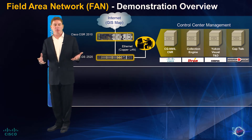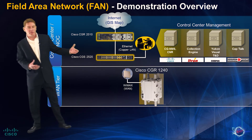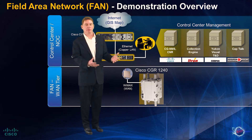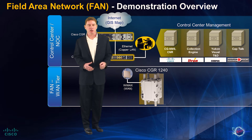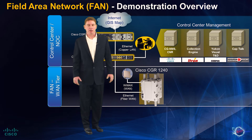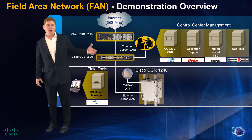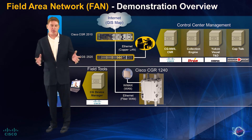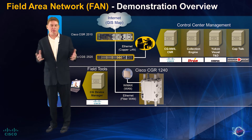At the core of the field area network WAN tier is the Cisco Connected Grid Router 1240, which provides a utility-grade ruggedized routing platform for connecting devices in the field and routing communications over private WiMAX or public cellular networks back to the control center. The WAN connection could also be a fiber Ethernet connection if available, which is what is used for this demonstration. In addition to the Connected Grid NMS application, there is the Cisco tool for field personnel called Connected Grid Device Manager, used to manage a single CGR1000 series router with an intuitive graphical user interface.